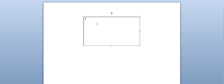Then we just delete the interior information and begin to type. We start with 'by' and put the goal date in — for example, September 10, 2017. Then we write: 'I am so happy and grateful now that...'